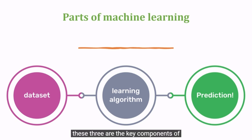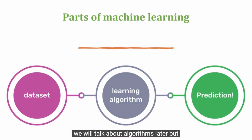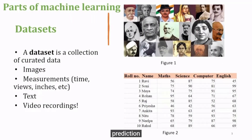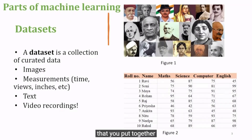These three are the key components of machine learning. We will talk about algorithms later, but let us start with data sets and prediction. A data set is a collection of data that you put together.